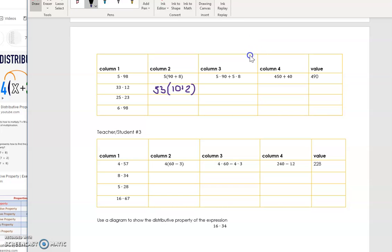In column three, I'm going to distribute that 33. So I'm writing this as two different multiplication problems. So 33 would be multiplied by the 10, and then I would add that to 33 multiplied by the 2.